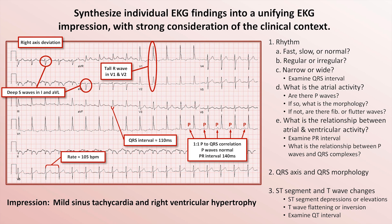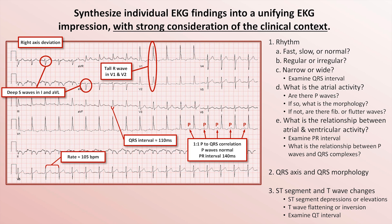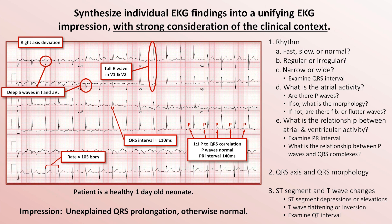Unfortunately, I forgot to consider the clinical context. What if that patient is not a middle-aged person with dyspnea and lower extremity edema, but rather a healthy one-day-old neonate? Infants tend to have QRS axis rightward of positive 90 degrees and tall R-waves in V1 and V2 on account of higher pulmonary artery pressure while in the womb. They also have faster heart rates and more narrow QRS complexes. So instead of concluding the EKG shows RVH, an appropriate impression might be unexplained relative QRS prolongation, otherwise normal — and the resting heart rate of 105 for a one-day-old is actually a bit slower than average.